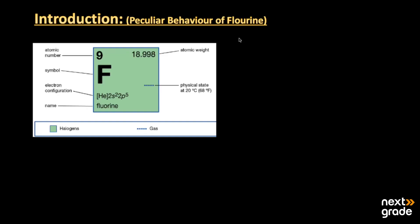My dear students, I hope all of you are fine and doing well. The topic we are going to discuss is the peculiar behavior of fluorine. Fluorine is basically a halogen that belongs to group 7A. It contains seven electrons in its valence shell, and fluorine is basically a non-metal which is the first member of the halogens.